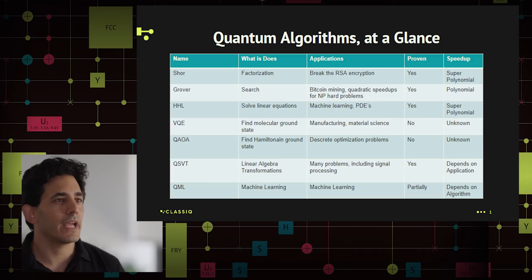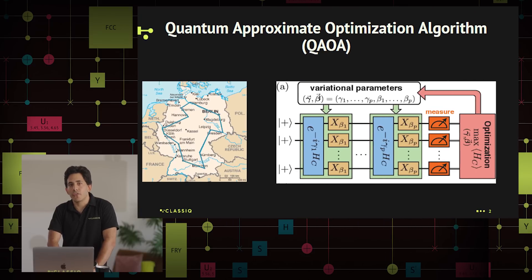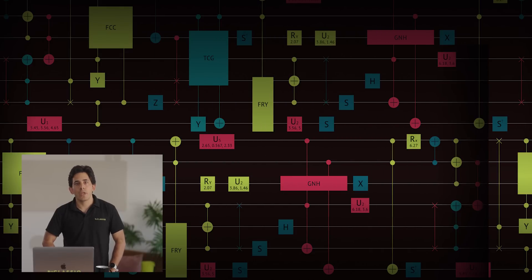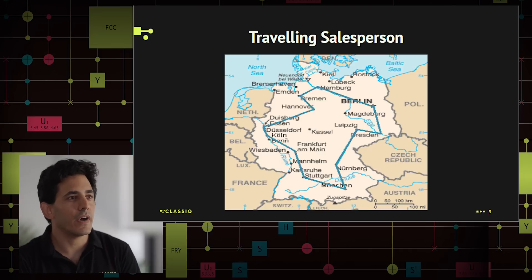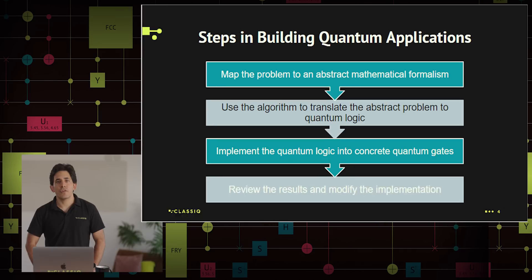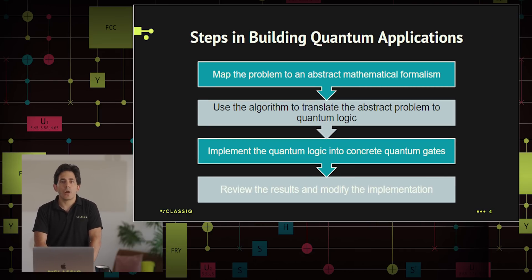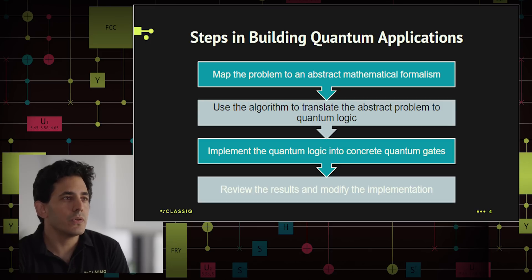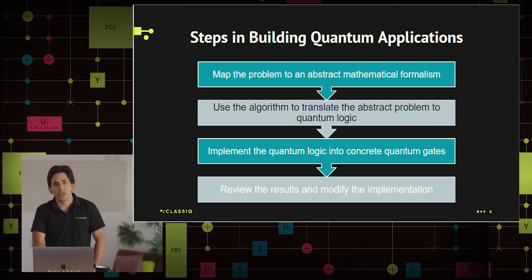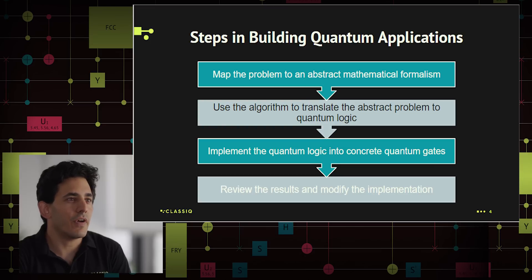Now let's see how we approach building an application with one of these algorithms. Let's take QAOA for example. The QAOA algorithm, or quantum approximate optimization algorithm, is a heuristic algorithm that can be applied to discrete optimization problems. Many of the world's hard problems can be mapped into optimization problems. For example, we can take the well-known traveling salesperson problem in which we need to find an optimal route passing through a list of cities. Here are the main fundamental steps we follow. First, we map the optimization problem into a well-defined mathematical formalism: variables, domains, constraints, and objective function. Next, we use the QAOA framework to turn this abstract problem into a sequence of quantum operations and logic. Then we implement the quantum logic into concrete quantum gates taking into account the quantum computer or simulator that will run the algorithm. And finally, we review the results and modify the implementation if necessary.